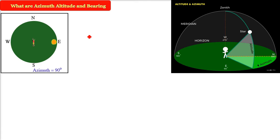What are azimuth, altitude, and bearing? Whenever you want to identify and locate the position of an object in the sky, you need all of these. You need azimuth, altitude, and bearing.